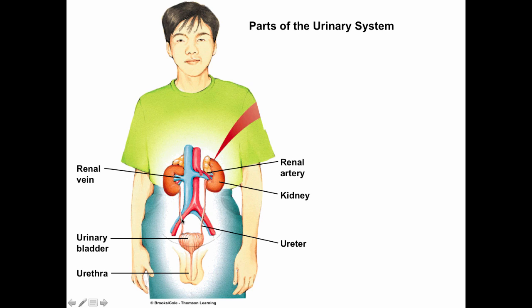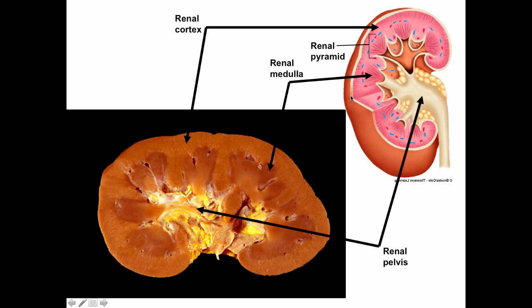We have two kidneys on either side. Each kidney is kidney-shaped — like a kidney bean. Looking at a cross-section, we notice there are two visual zones. There's the outer region, which is lighter in color, called the renal cortex. And there's the inner region, which is darker in color, called the renal medulla. So we have the outer cortex and the inner medulla.